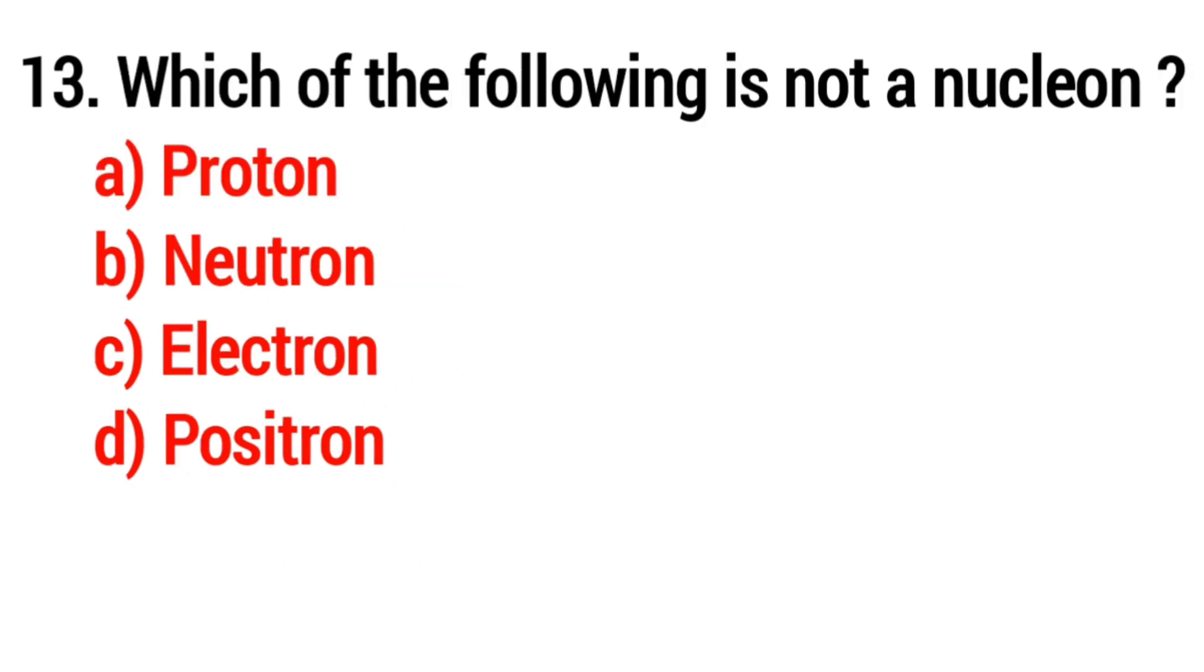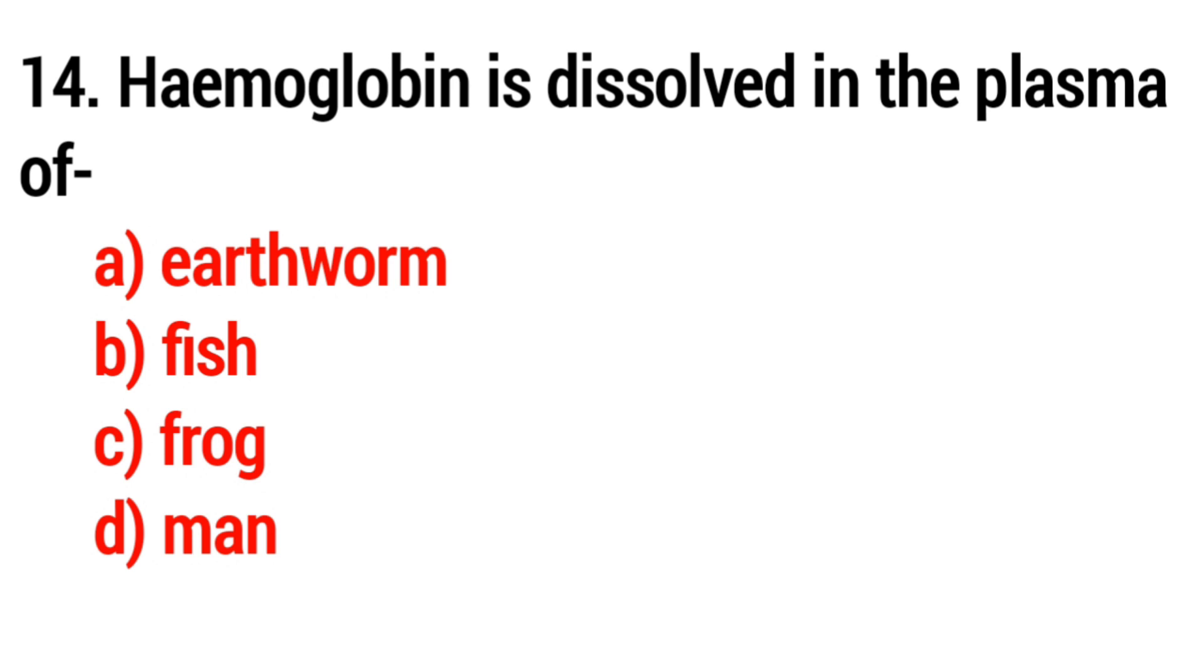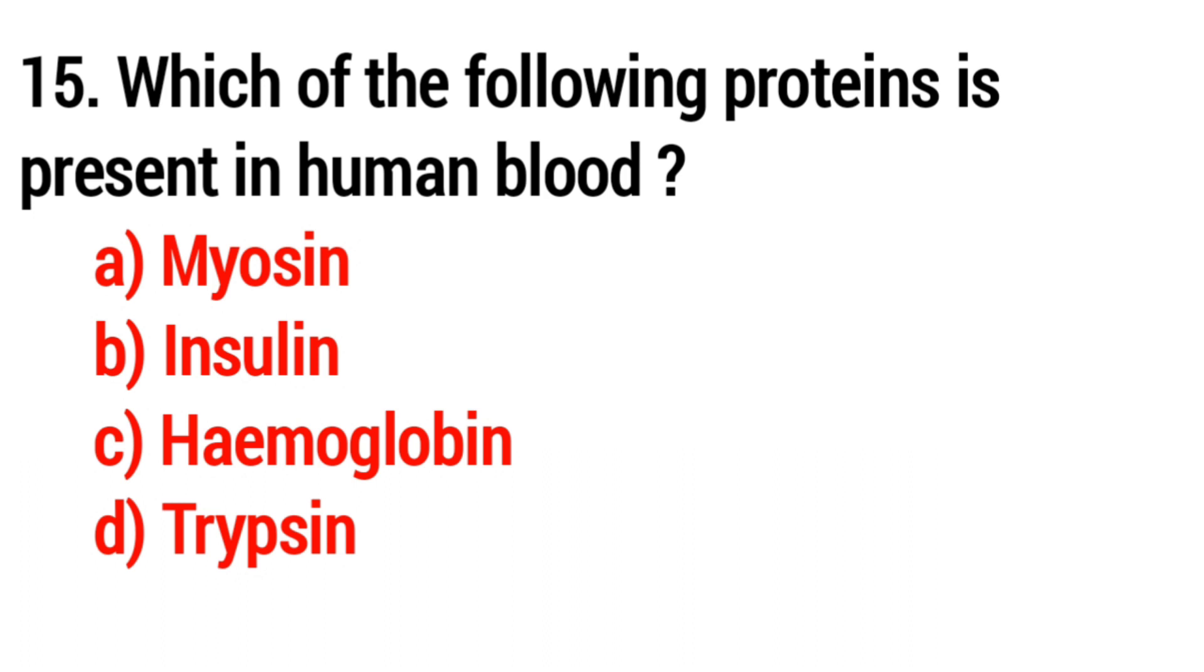Question 13: Which of the following is not a nucleon? The answer is Option D: positron. Question 14: Hemoglobin is dissolved in the plasma of? The answer is Option C: earthworm.